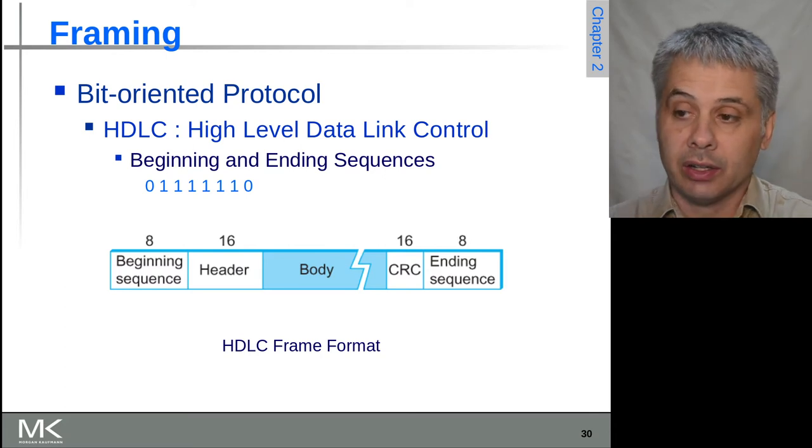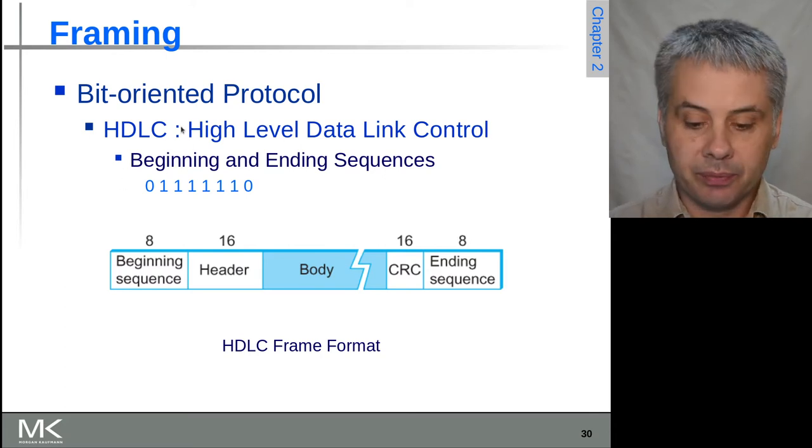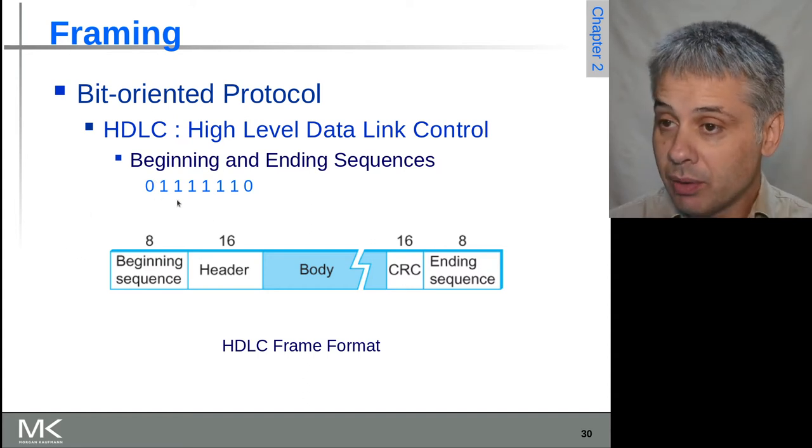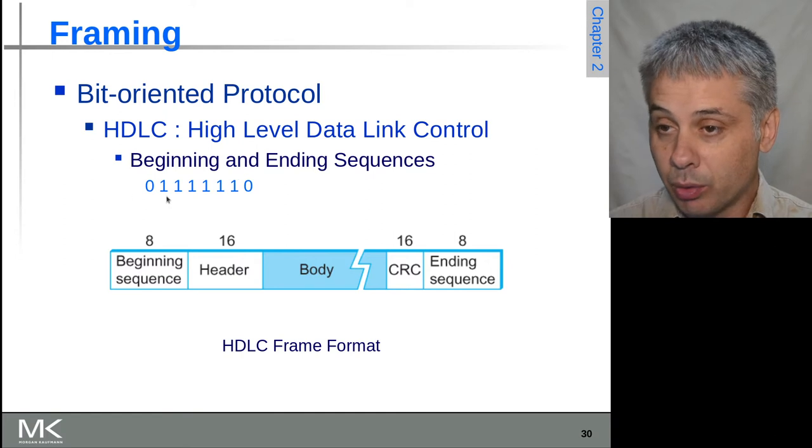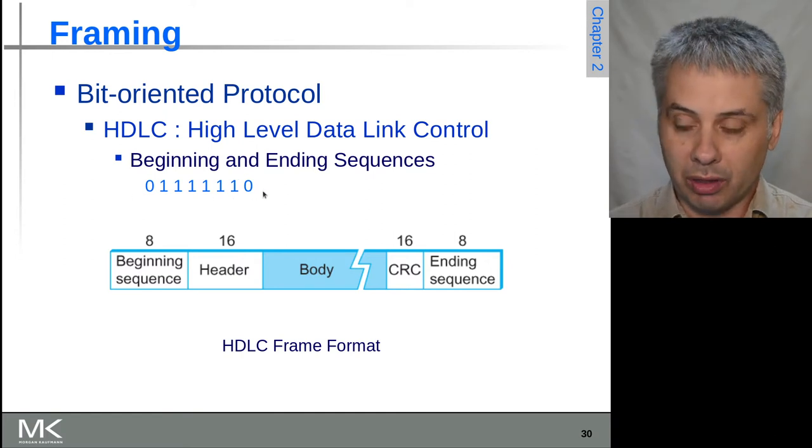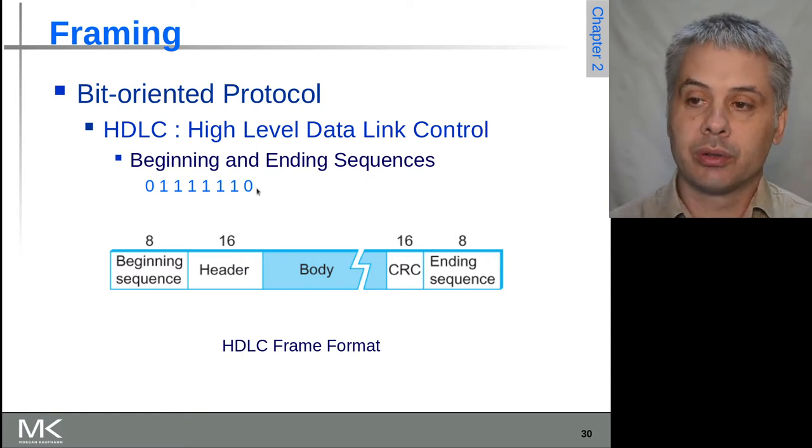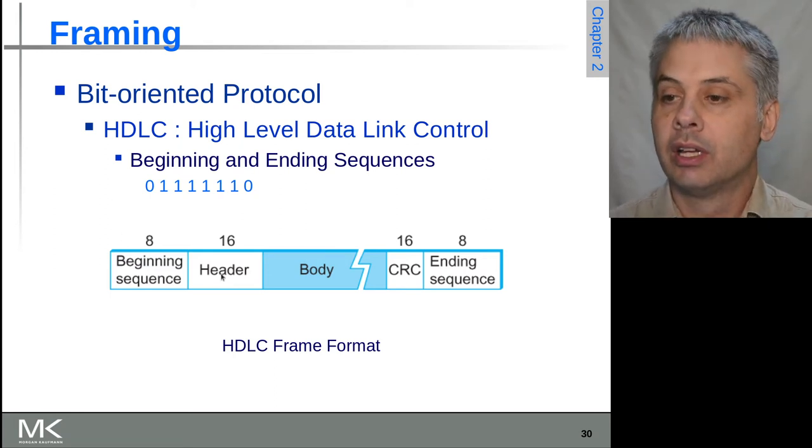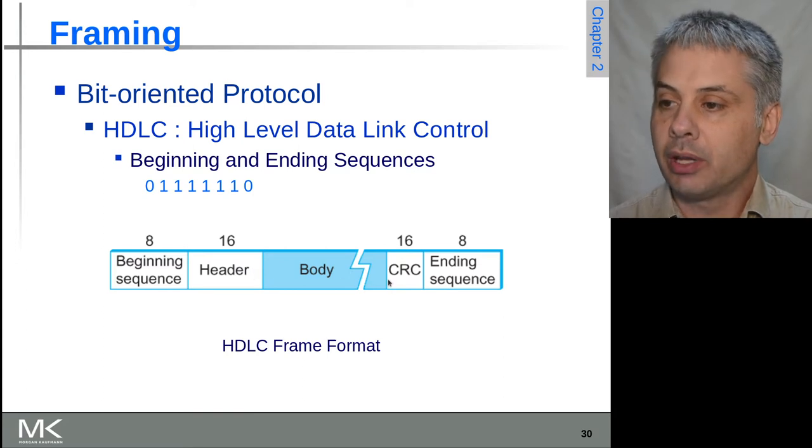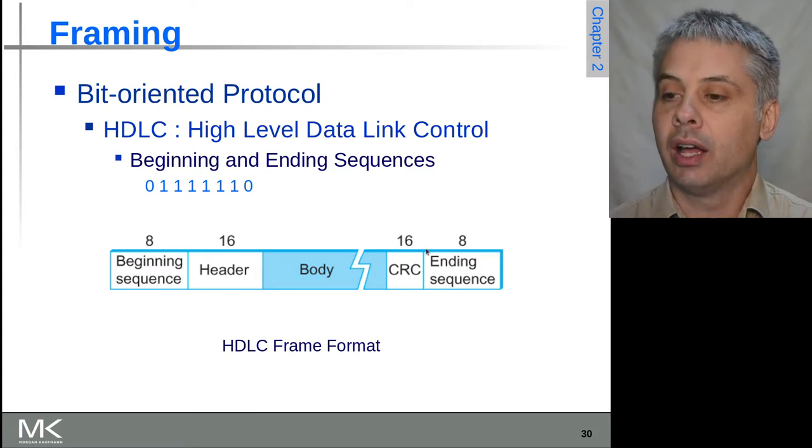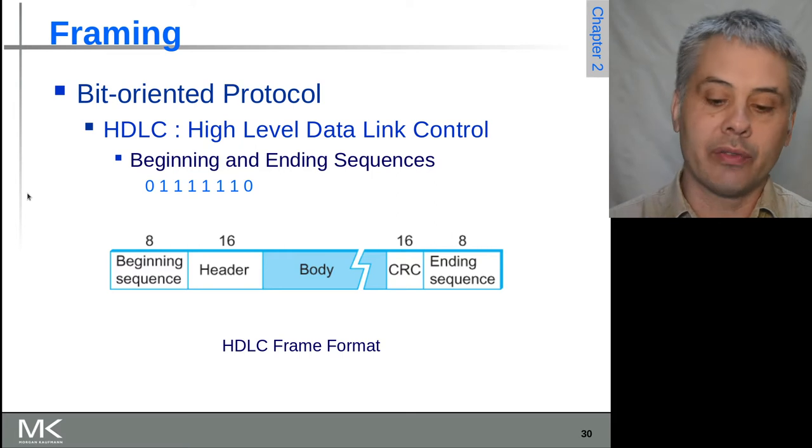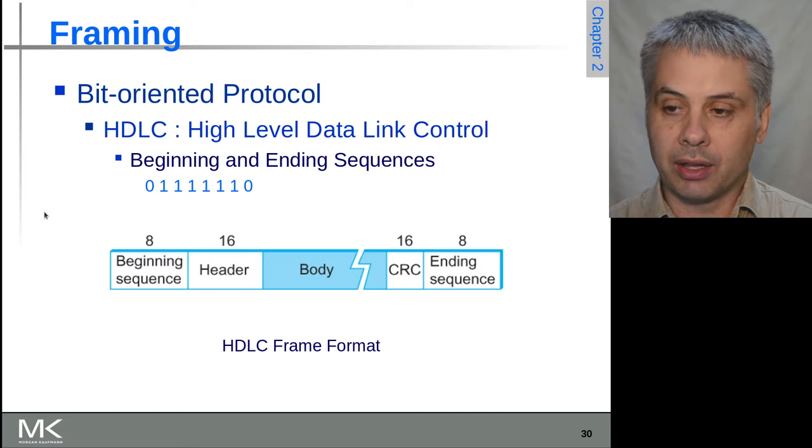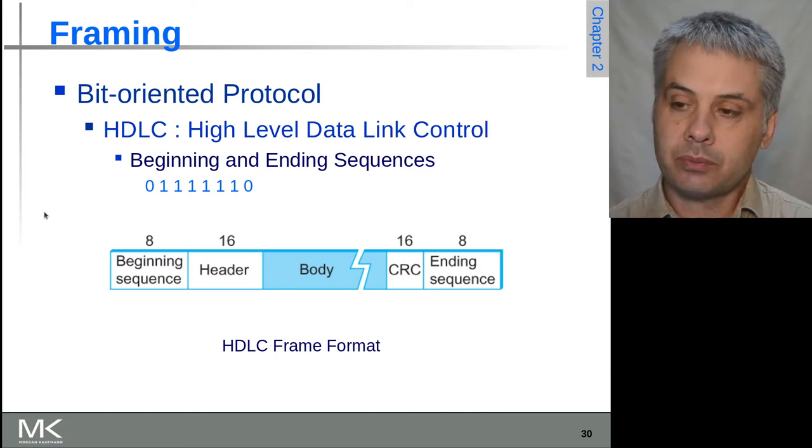In the case of HDLC, we have this beginning and end sequence which is a zero and six ones and a zero, which shouldn't occur anywhere else if you're using something like 4b5b encoding. Then you can have the header and the body, CRC, and the end. So again, it's the same kind of idea—it's just that we're using fields that are bit-oriented rather than byte-oriented.